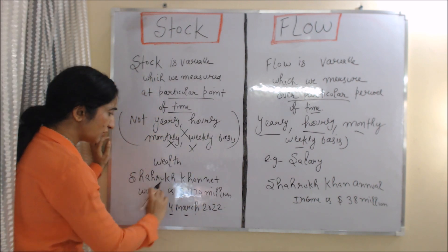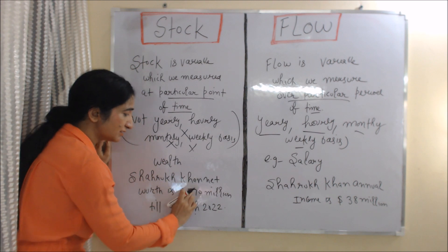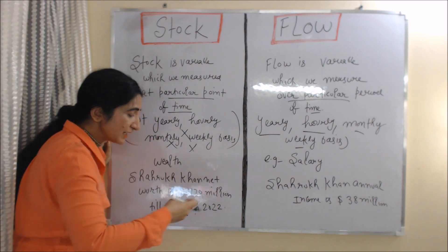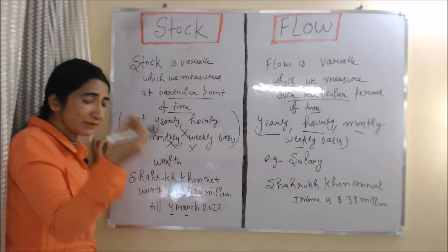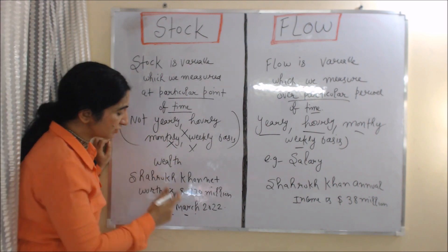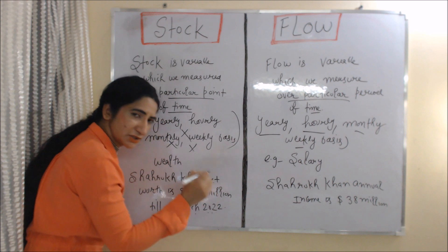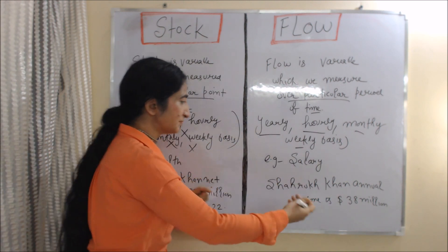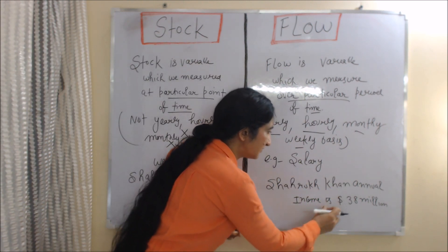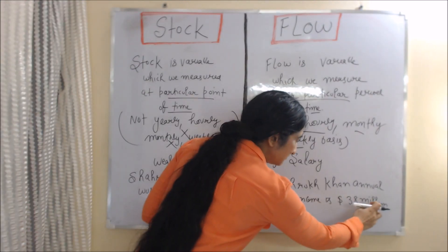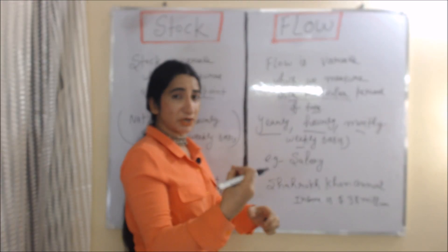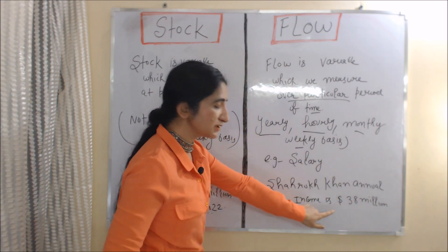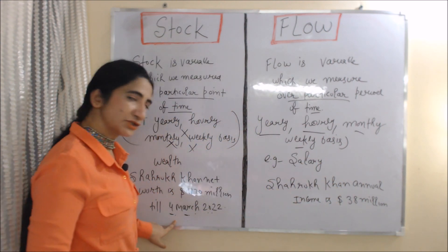For example, if I say Shahrukh Khan's net worth is $770 million as of 4 March 2022, I am telling about his wealth at a particular point — that point being 4 March 2022. That is the stock concept. On the other hand, if I say Shahrukh Khan's annual income is $38 million, I am telling about his income at a particular period — annual — so this is the flow concept.